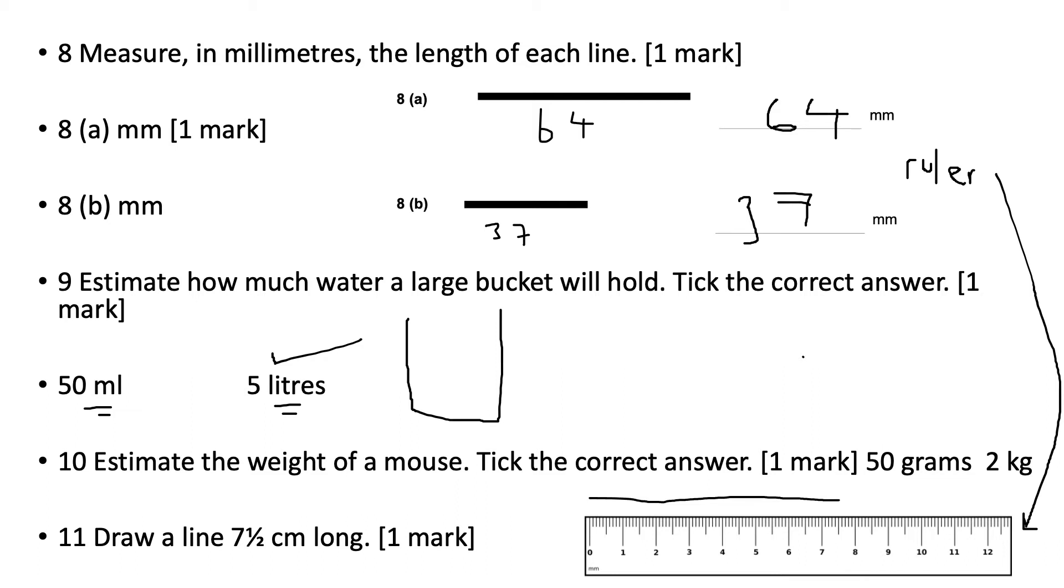If you imagine that a normal can of coke is 330 milliliters, 50 milliliters is pretty small. The clue here is looking at the large bucket, so a bucket can hold potentially up to 5 liters. Question number 10, estimate the weight of a mouse, tick the correct answer: 50 grams or 2 kilos. Well a mouse would weigh probably about 50 grams.